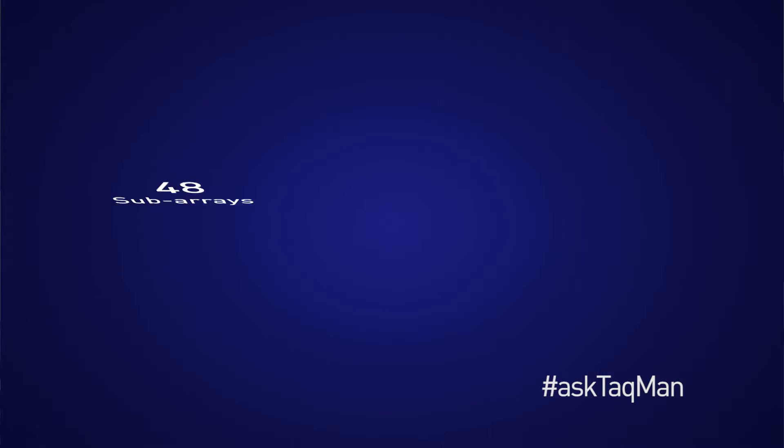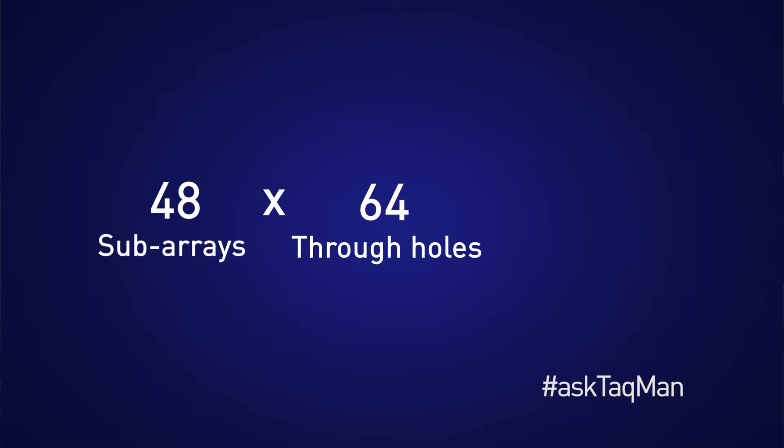Sample tracking can be simple, but on an OpenArray plate with so much flexibility in sample and assay combinations, without assistance it could get a little complicated. A single OpenArray plate has 48 subarrays and each of those subarrays contains 64 through-holes, combining for a whopping 3,072 possible sample assay combinations. This is why Life Technologies provides files and software to facilitate the sample tracking process for our customers.